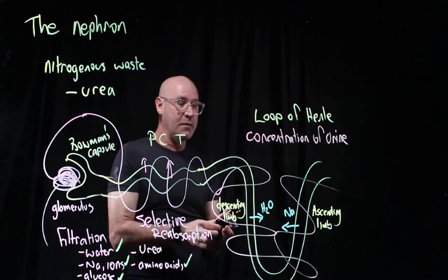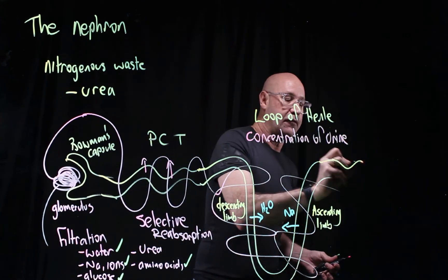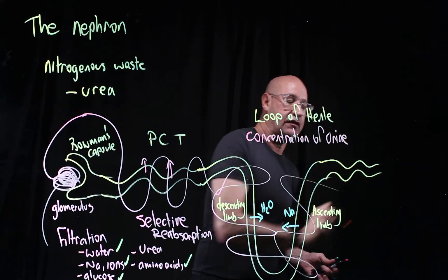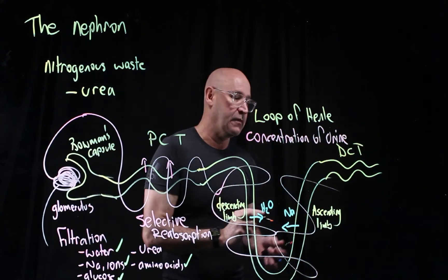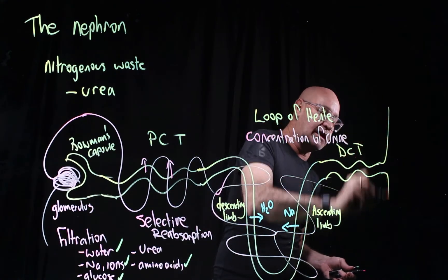Now we're almost finished. After this, we have another convoluted section called the distal convoluted tube, and then after that, the collecting duct.